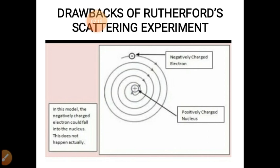As you can see, the diagram that is depicted here shows negatively charged electron, positively charged nucleus. In this model, the negatively charged electron could fall into the nucleus. This does not happen actually.